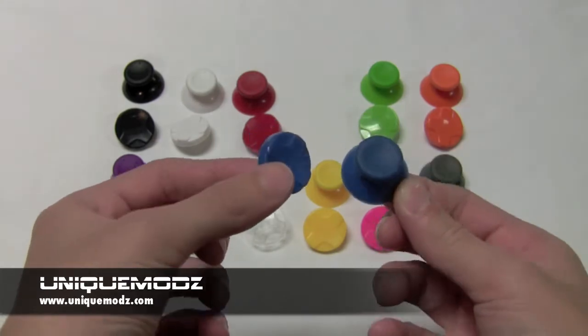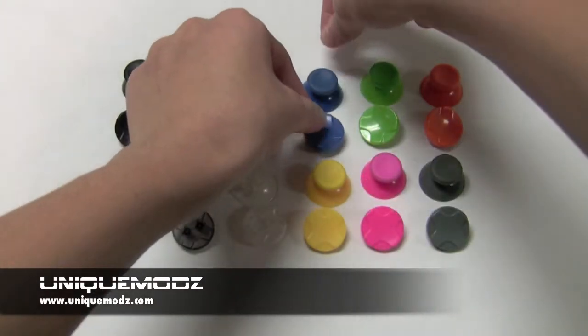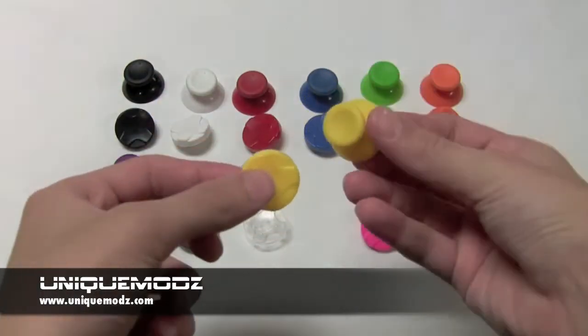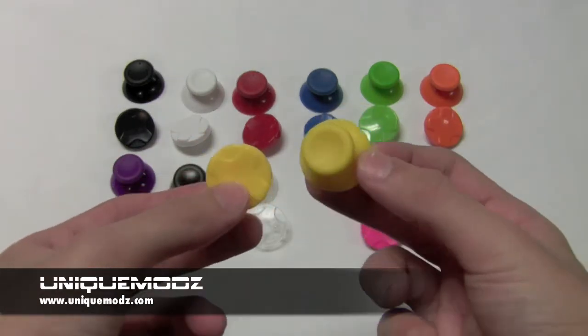Then these are our blue thumbsticks and d-pad. As you can see all the colors are very vibrant. So it goes together with the designs really well.